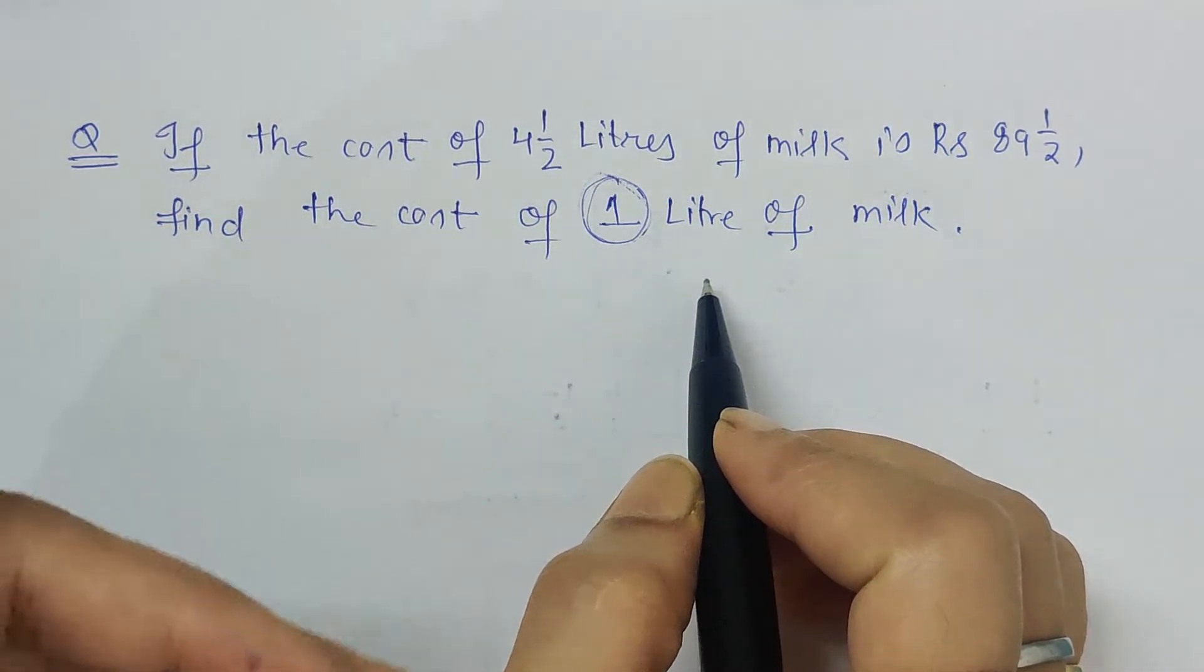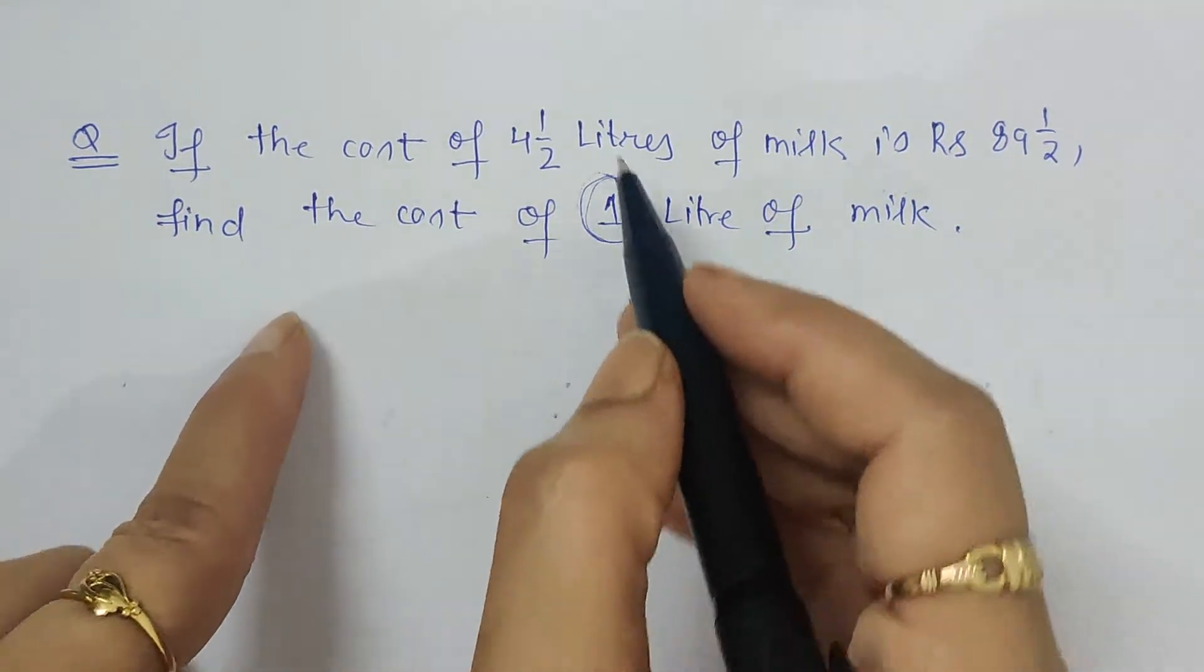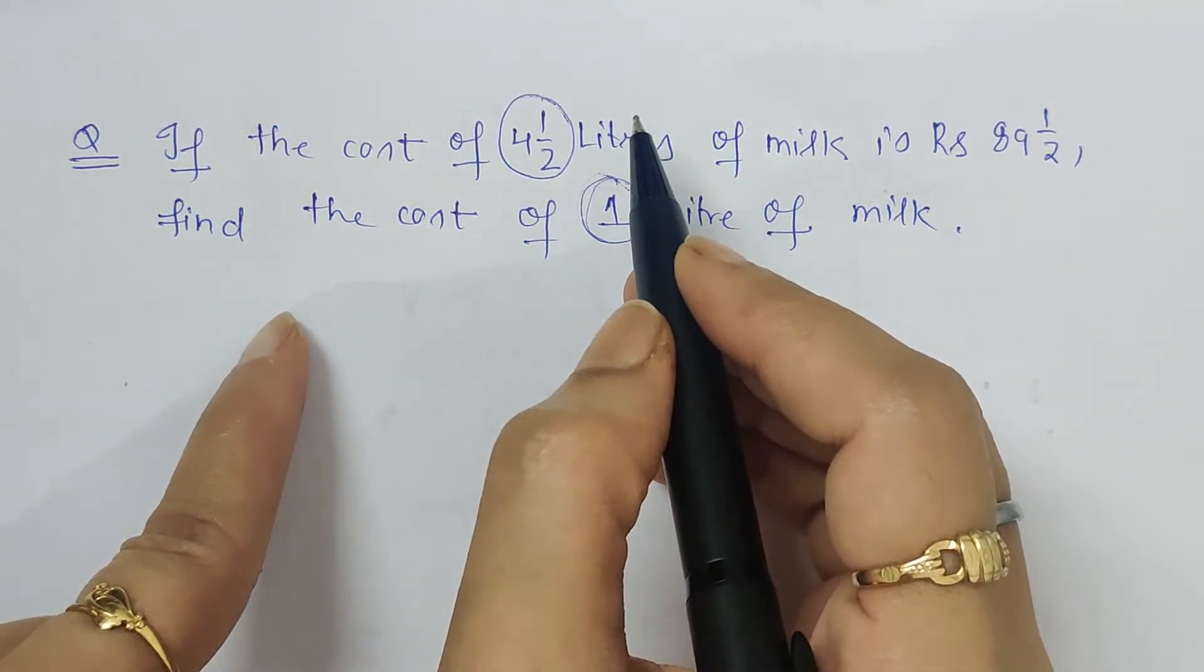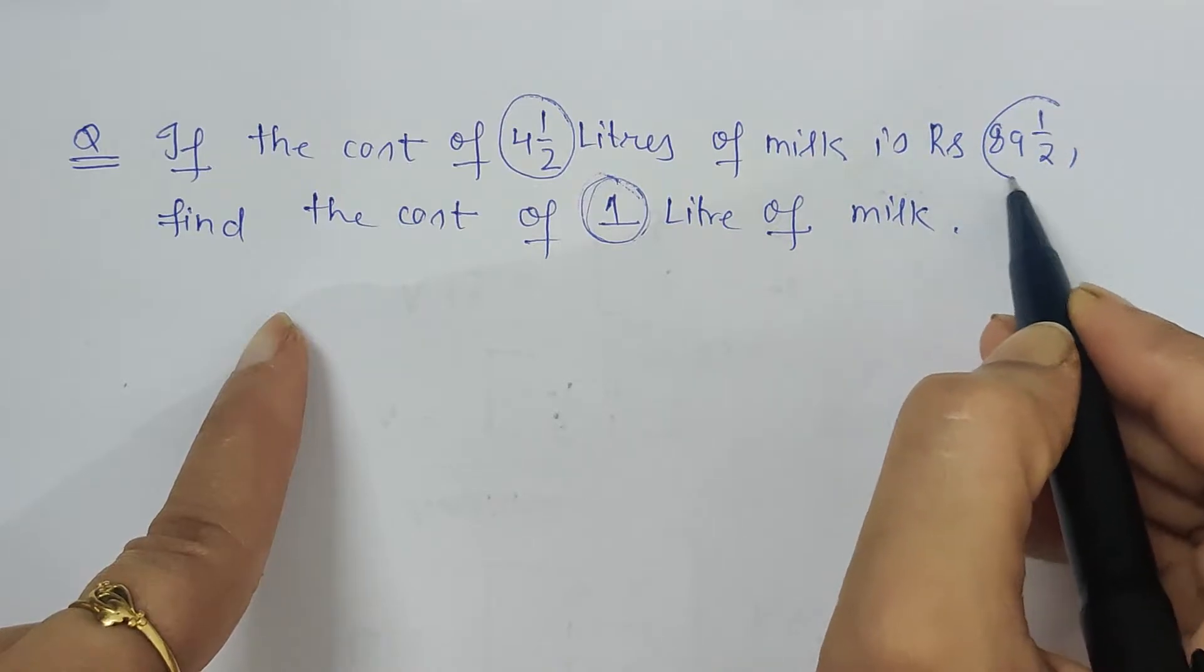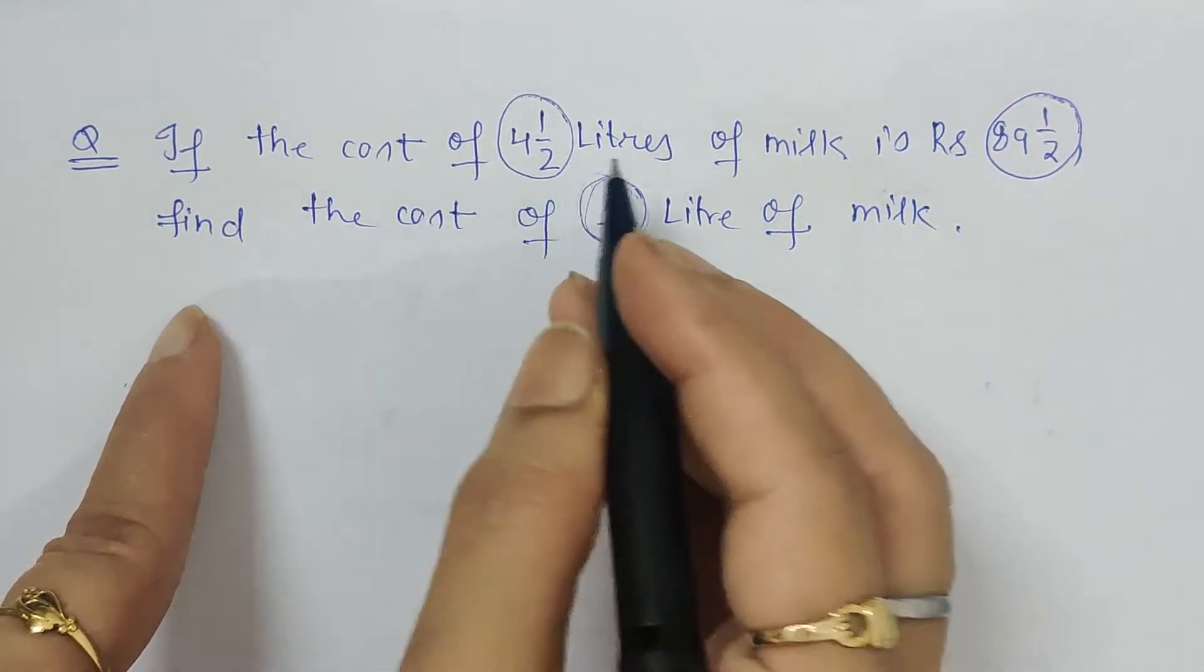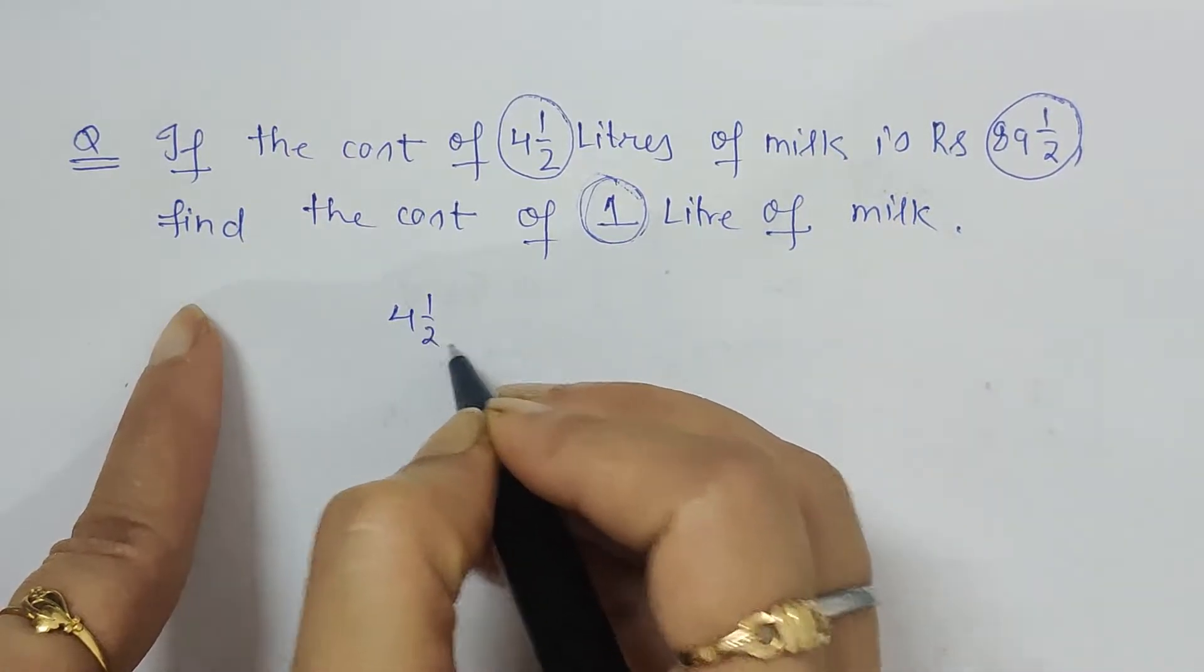First we will convert this mixed fraction to improper fraction or rational form. Let's write: cost of four and a half liters. Four and a half can be written as two fours, eight plus one is nine by two liters.